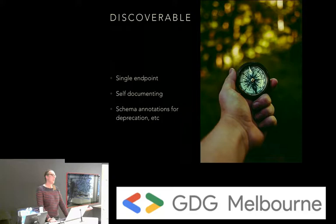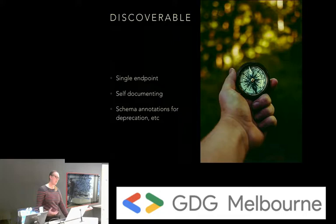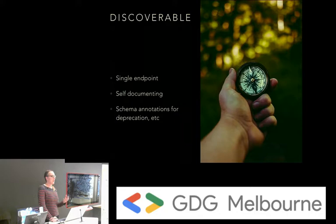My favourite feature of GraphQL is how discoverable it is, and this is especially important at Eugene as we scale. We don't want people to have to dig around to find where all our APIs and microservices are. It's a single endpoint and it's self-documenting, so it's really easy to pick up for new people. It also has schema annotations — little notes you can put into the schema that give it new functionality, like deprecation of fields, so clients are notified if they're using a deprecated field.